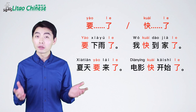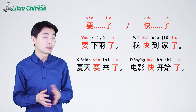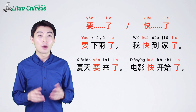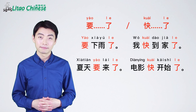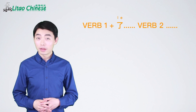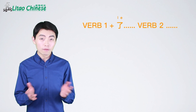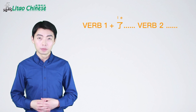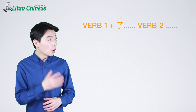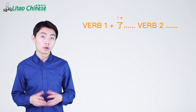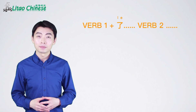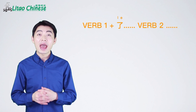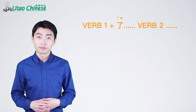If you want to learn more about this pattern, you can check lesson 29 of our elementary Chinese course. In the next pattern, there are two verbs, and le follows the first verb. The whole pattern is normally used for the future, to say that a person will do the second thing after finishing the first one.